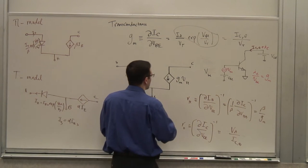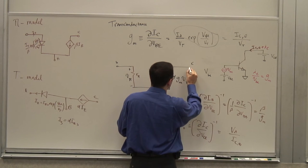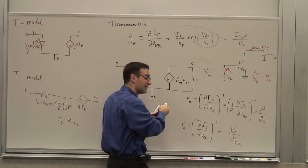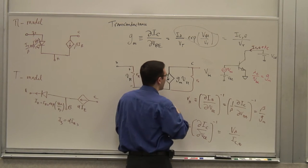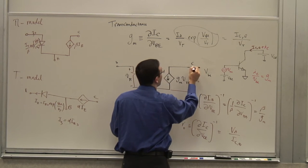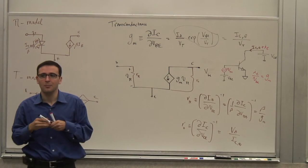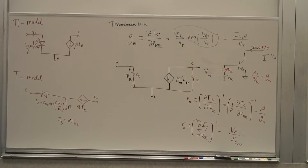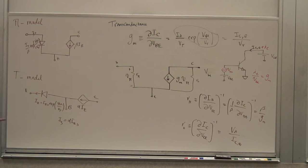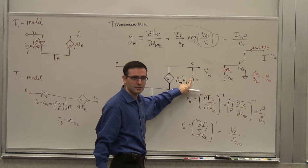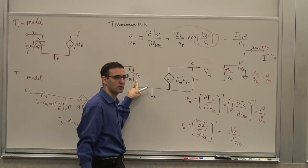Now let's put in this third component — the output resistance. These are the three components we most often use: the transistor action gm Vpi, the output resistance Ro, and the input resistance Rpi. This is the pi model in small signal form.